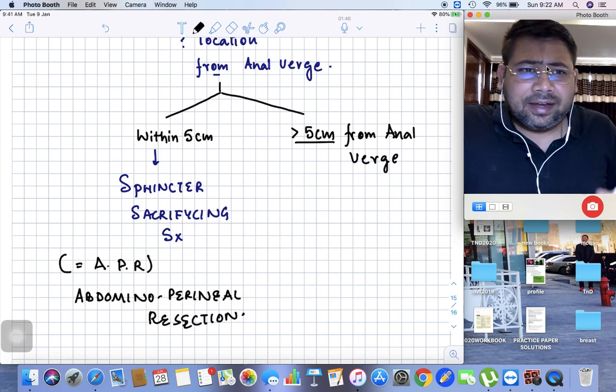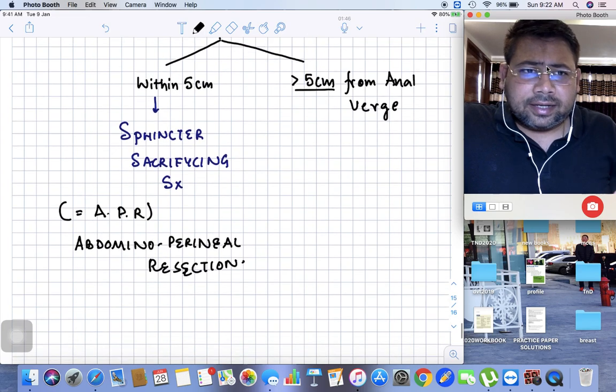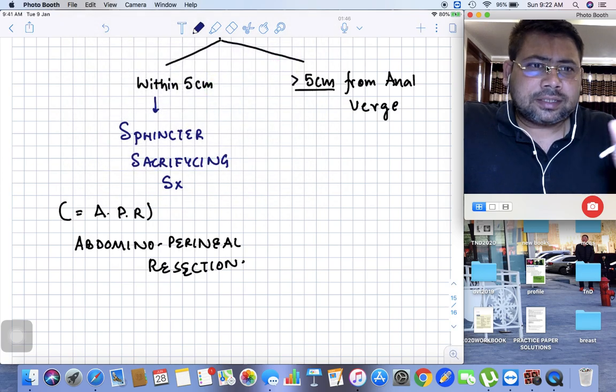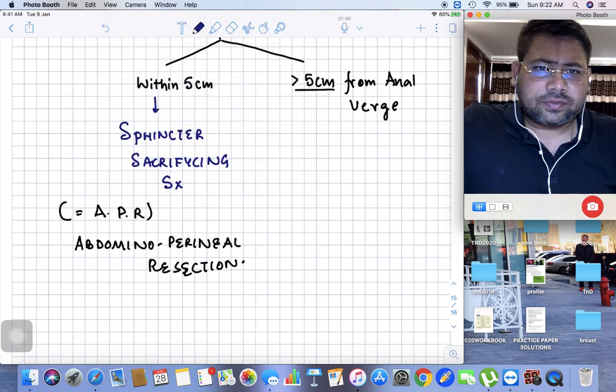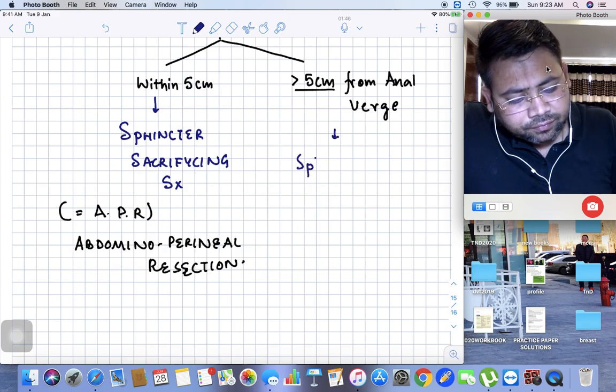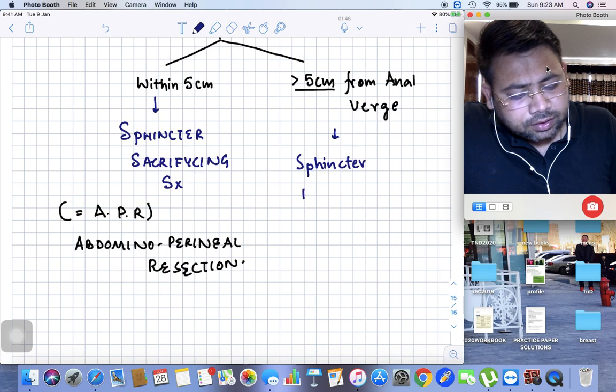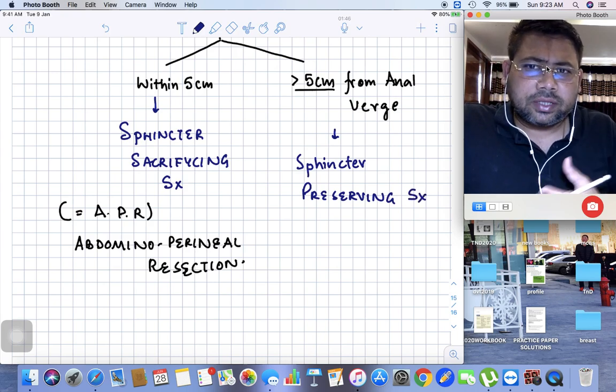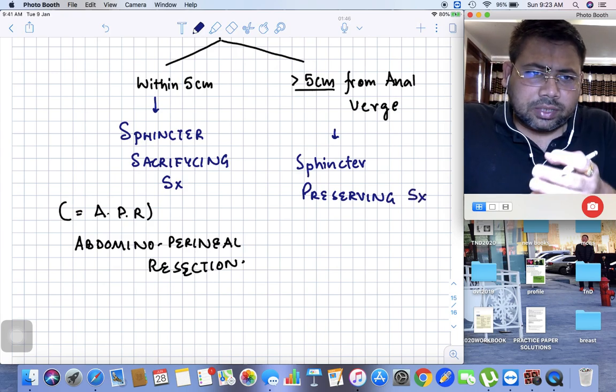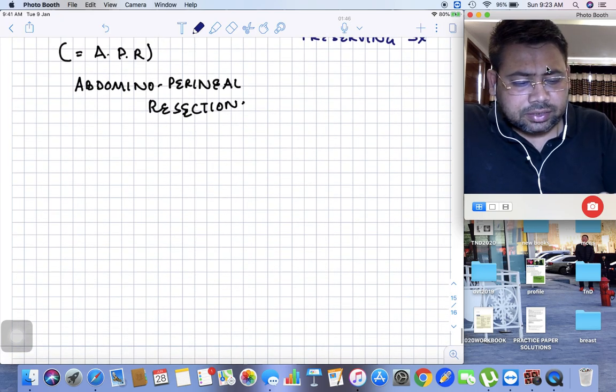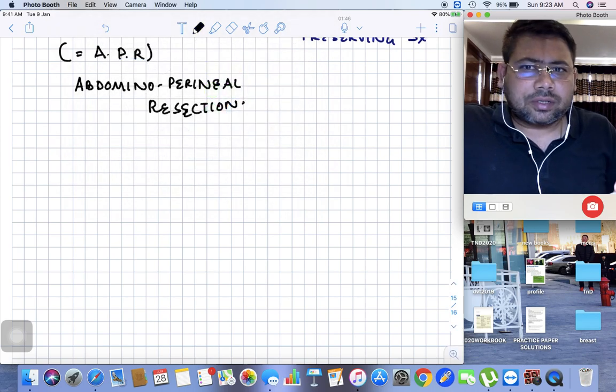Let me highlight why it's called abdominal perineal resection, but before that, if it is more than five centimeters from the anal verge, you go for sphincter preserving surgery. So this is the difference for tumors less than five centimeters from the anal verge versus tumors which are more than five centimeters.